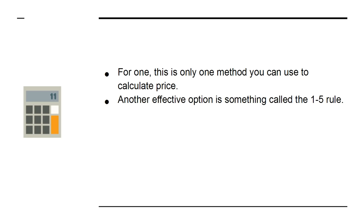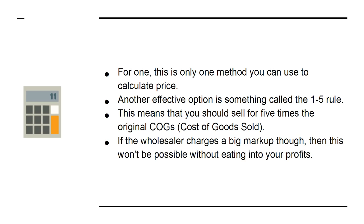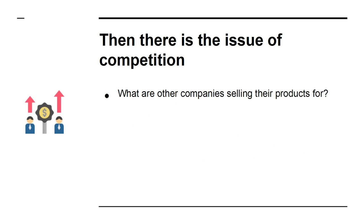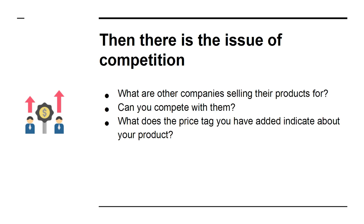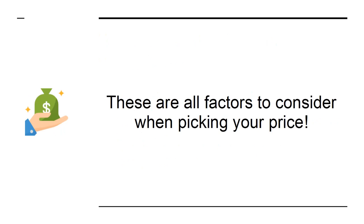Another effective option is something called the 1 to 5 rule. This means that you should sell for 5 times the original COGs — cost of goods sold. If the wholesaler charges a big markup though, then this won't be possible without eating into your profits. Then there is the issue of competition. What are the other companies selling their products for? Can you compete with them? What does the price tag you have added indicate about your product? And what about special deals and offers? Have you left room? These are all factors to consider when picking your price.